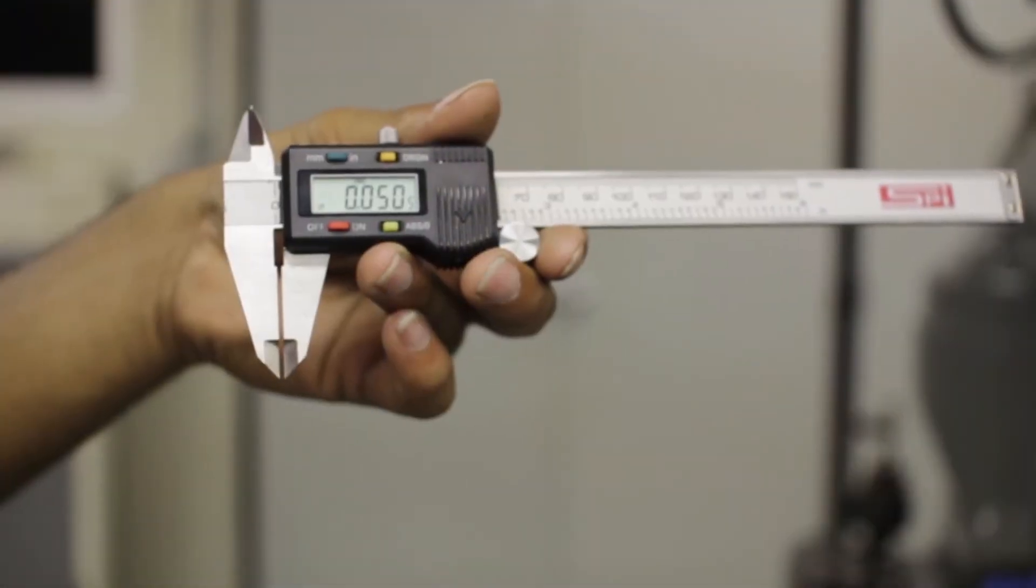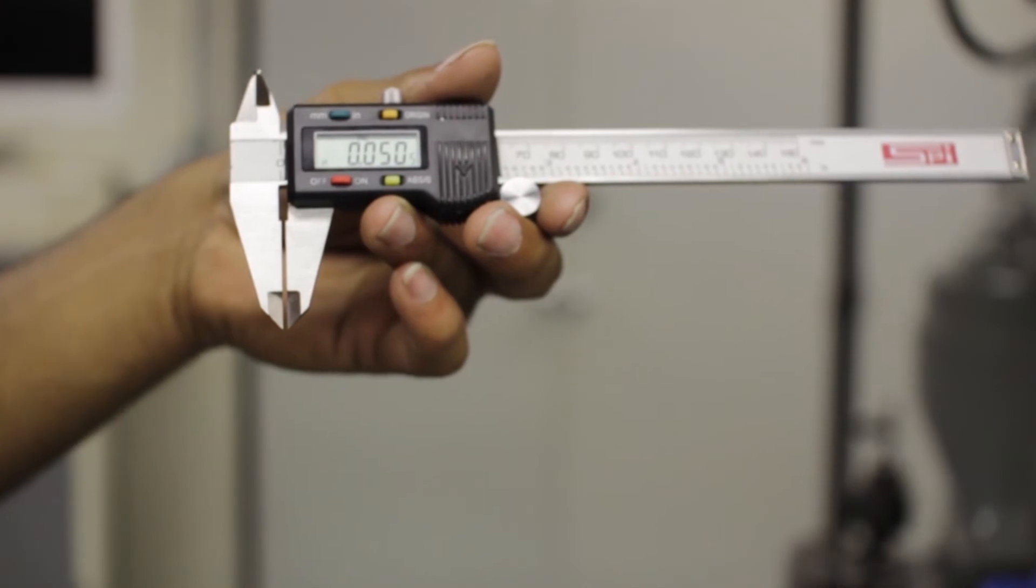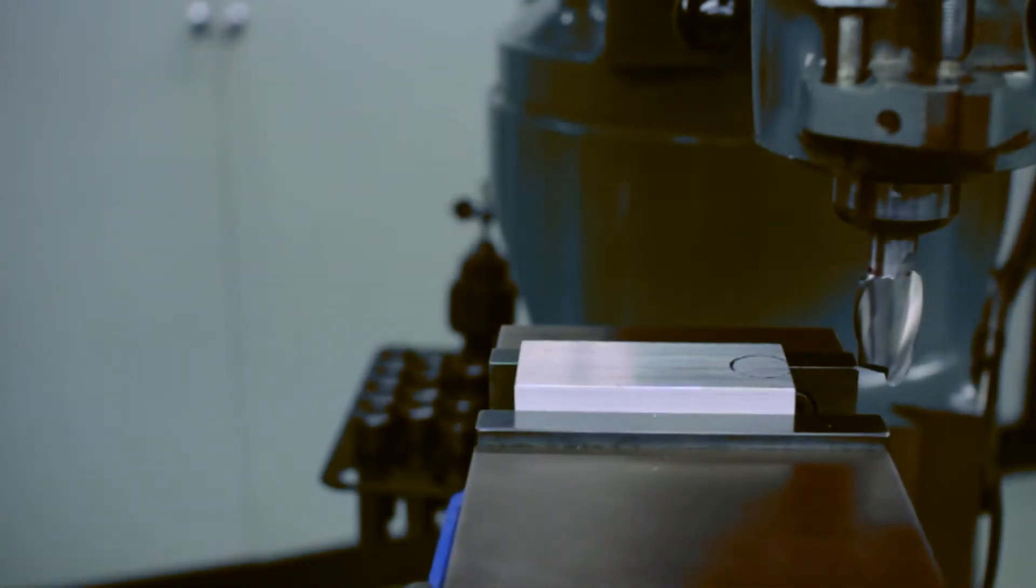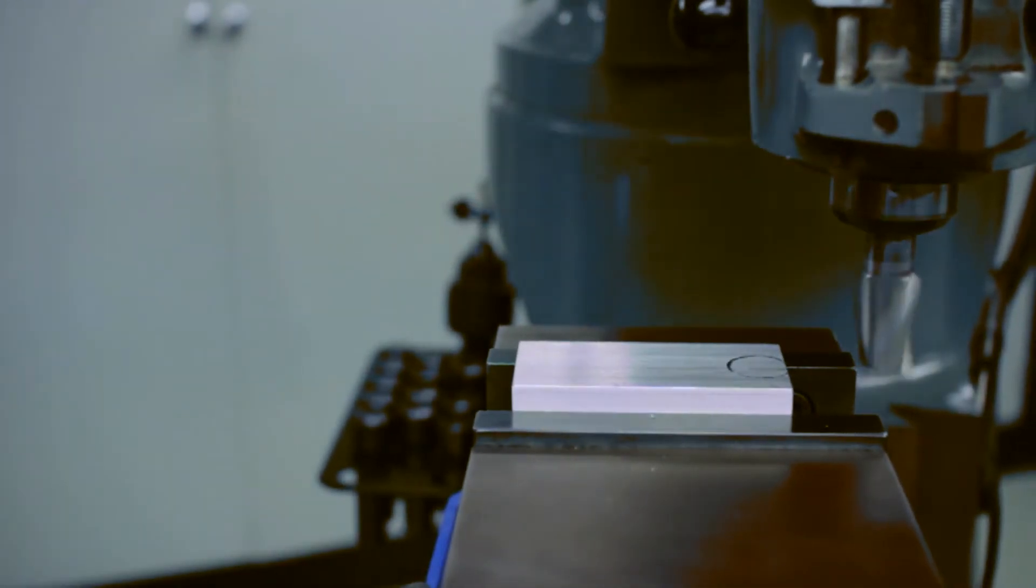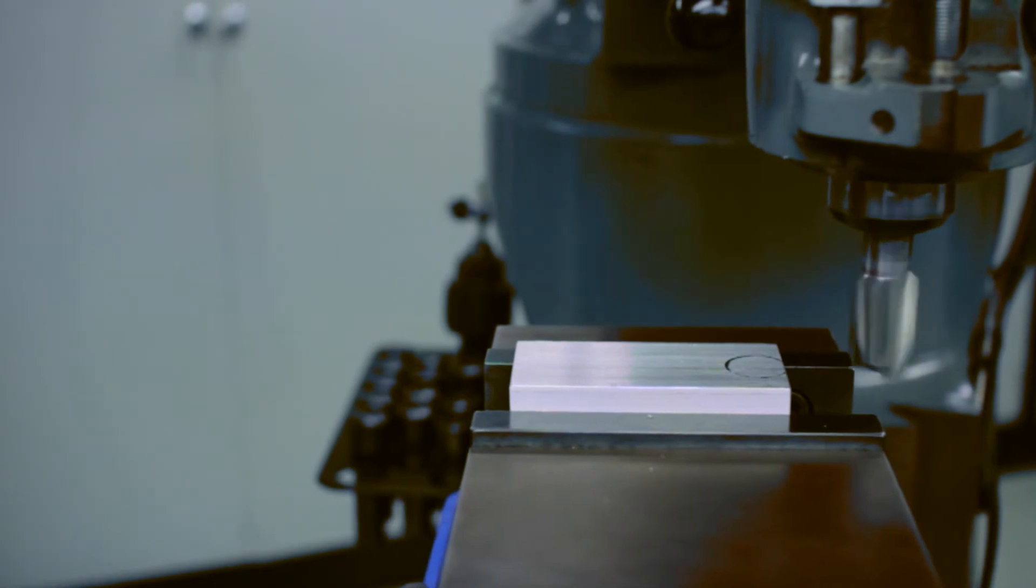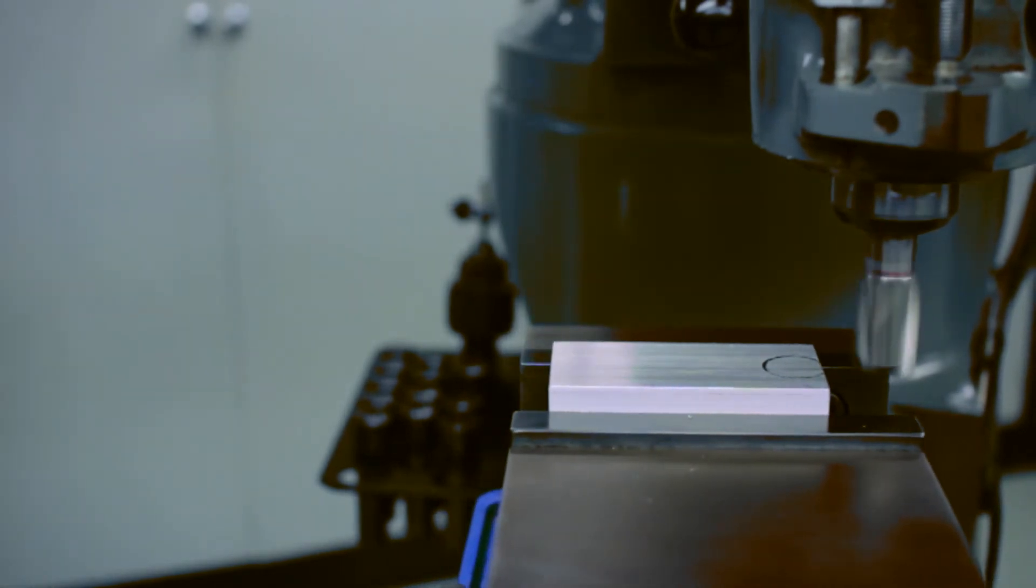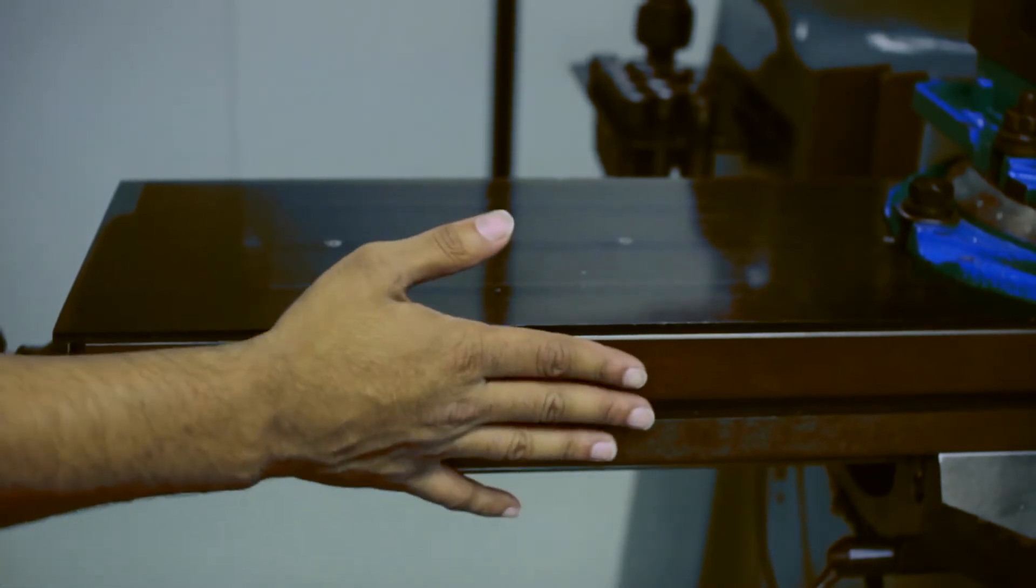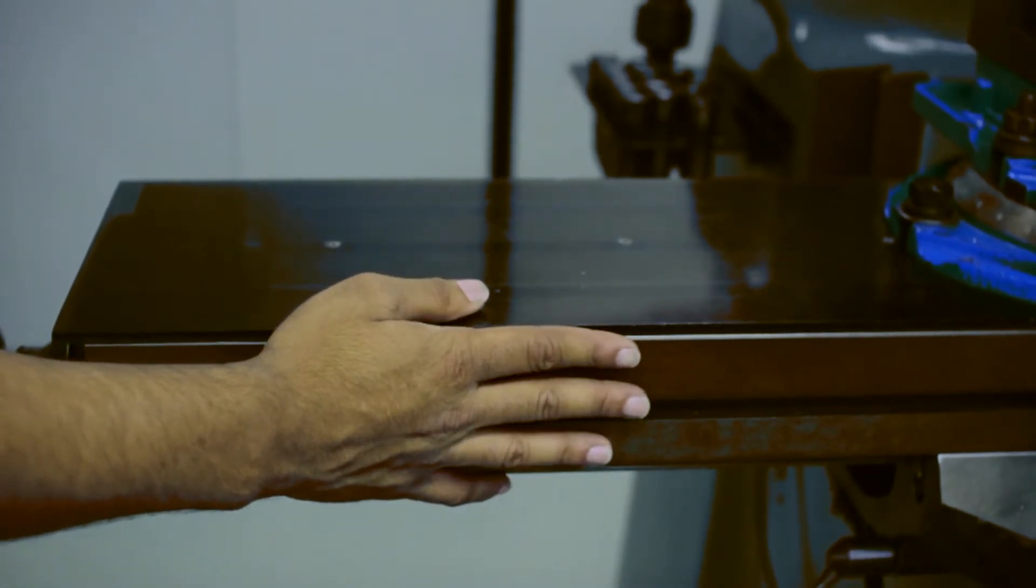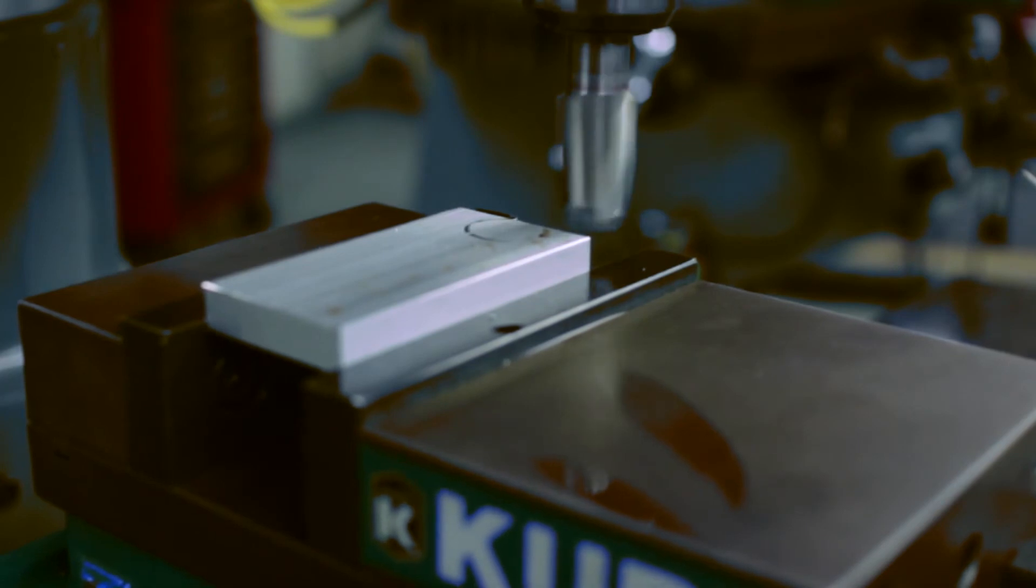The max depth of cut in this lab is fifty thousandths of an inch. We're going to turn on the spindle and slowly ramp it into the part. Make sure you keep your hand on the table while you're machining to feel for vibrations. Make sure you slowly ramp into the part.